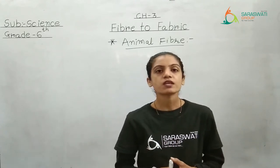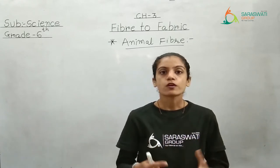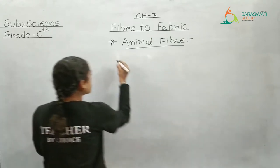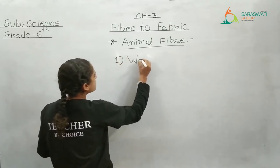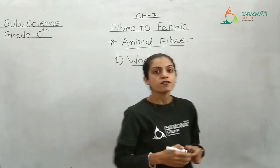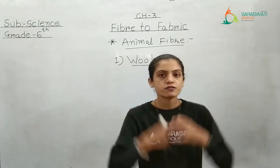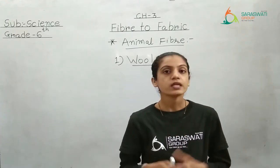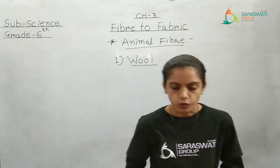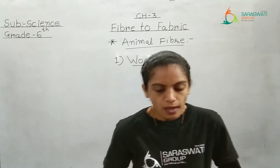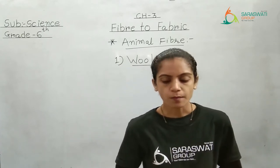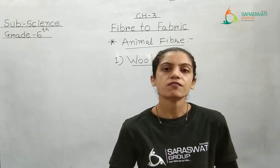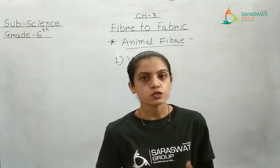There are different animals which give the raw material for making fiber. But as per your grade, we have to understand only two types of animal fiber. In your textbook, animal fibers: fibers that are obtained from animals are known as animal fibers. Underline this. This is the definition of animal fiber. The fiber which we get from the animal is known as animal fiber.